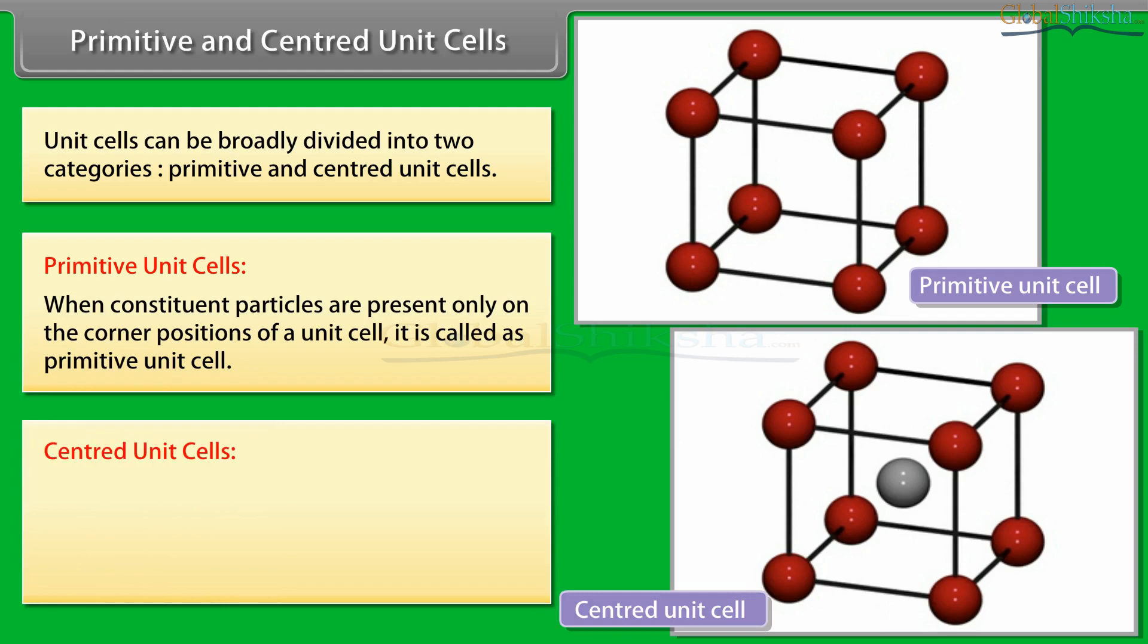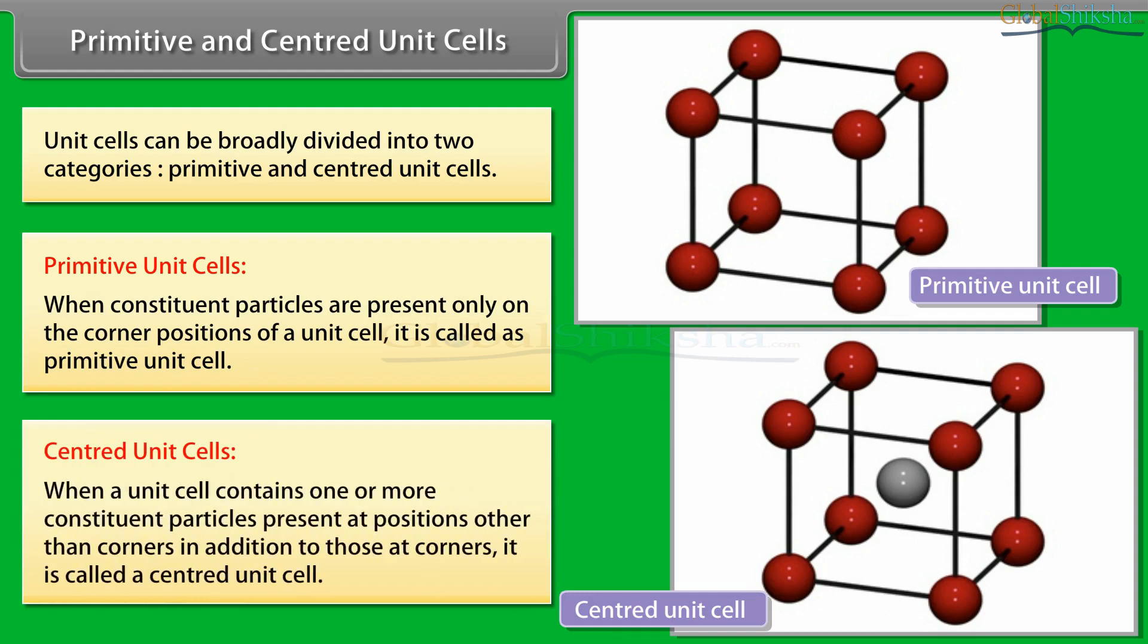When a unit cell contains one or more constituent particles present at positions other than corners in addition to those at corners, it is called a Centered Unit Cell.